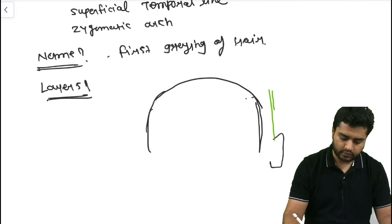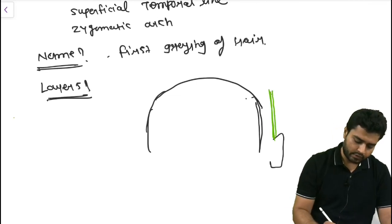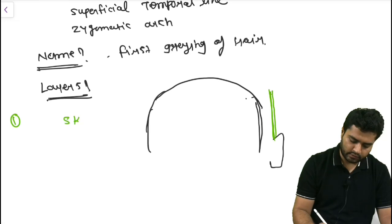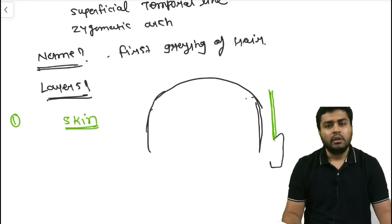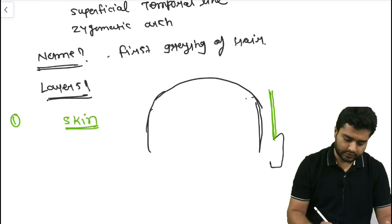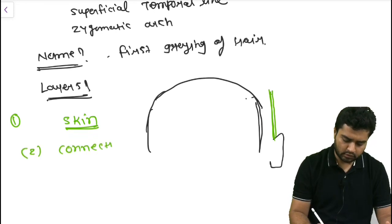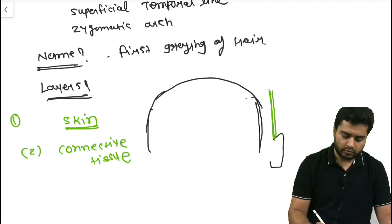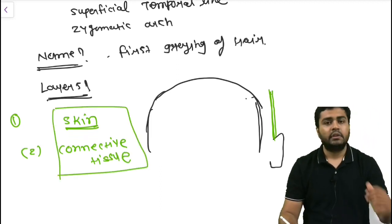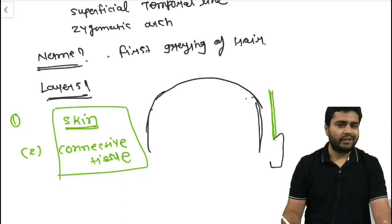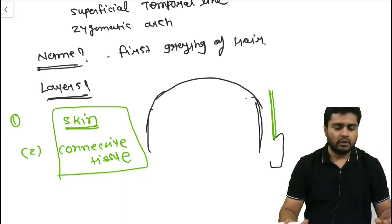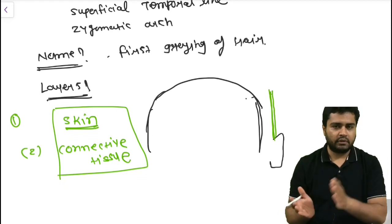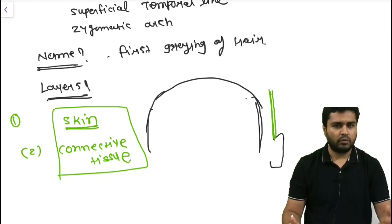The first layer here is the skin. The second layer is the connective tissue. These two layers have characteristics similar to the scalp — the skin is thick and hairy, and the connective tissue connects the skin with the third layer.